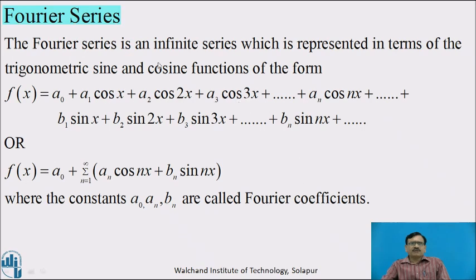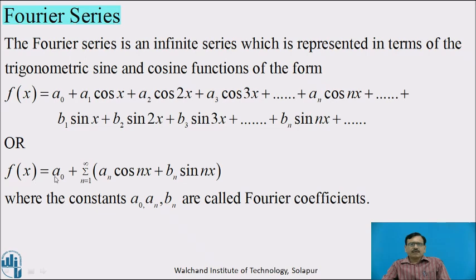Now we will see about the Fourier series. The Fourier series is an infinite series which is represented in terms of the trigonometric sine and cosine functions of the form: f(x) = a₀ + a₁cos x + a₂cos 2x + a₃cos 3x + ... + aₙcos nx + ... + b₁sin x + b₂sin 2x + b₃sin 3x + ... + bₙsin nx. This can be written in summation form as f(x) = a₀ + Σ(n=1 to ∞)(aₙcos nx + bₙsin nx), where the constants a₀, aₙ, bₙ are called Fourier coefficients.